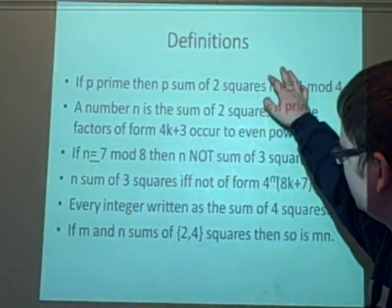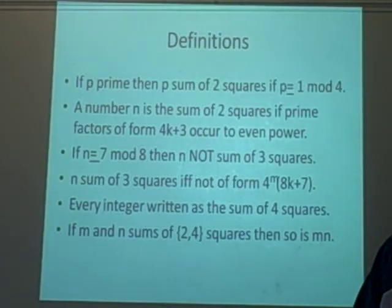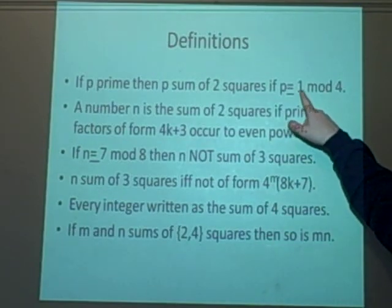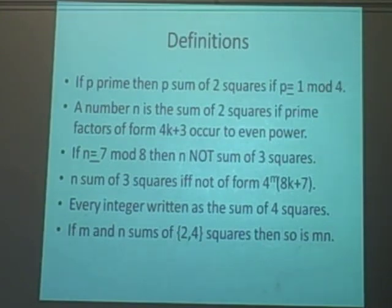We've got lots of definitions, but they're all useful for the example coming up. If we have a prime number, then other than the prime number two, it's a sum of two squares if it's equivalent to 1 mod 4. We can see the cases 0 and 2 aren't really needed because you don't get any even primes other than two.